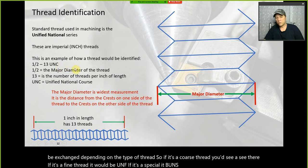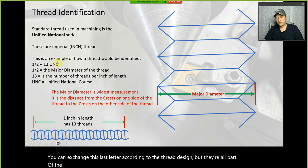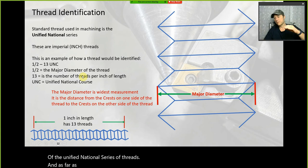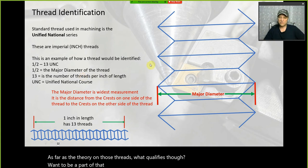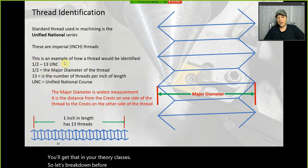If it's a coarse thread, you'd see C; if it's a fine thread, it would be UNF; if it's a special, UNS; super fine, UNSF. They're all part of the Unified National series of threads. The theory on what qualifies them will be covered in your theory classes.